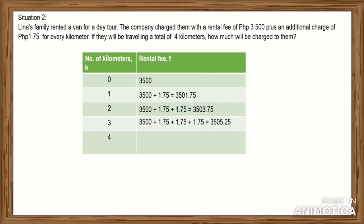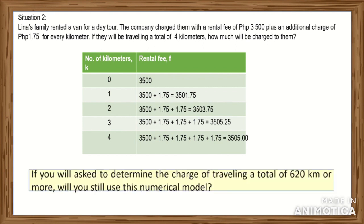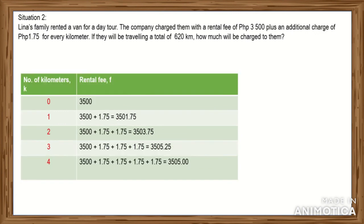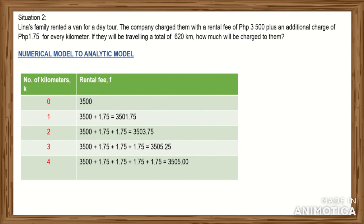For 3 kilometers added, the total is 3,505.25. And for 4 kilometers added, Lina's family will be charged 3,507 pesos. Now, if you will be asked to determine the charge for traveling 620 kilometers or more, will you still use this numerical model? Again, the answer is no. So from the numerical model, we are going to come up with an analytical model or equation, because it is impractical to make a table of values up to 620.